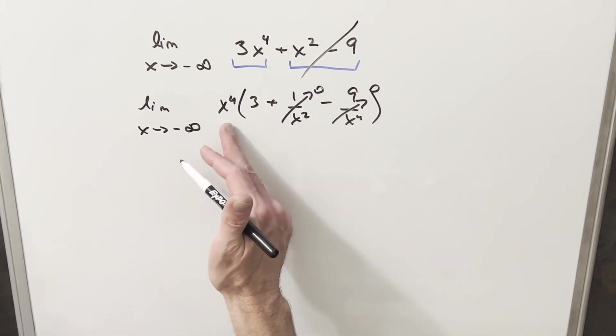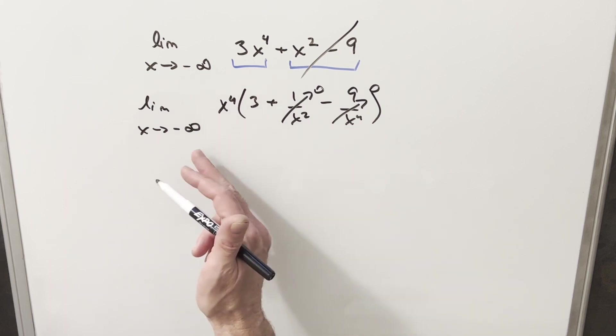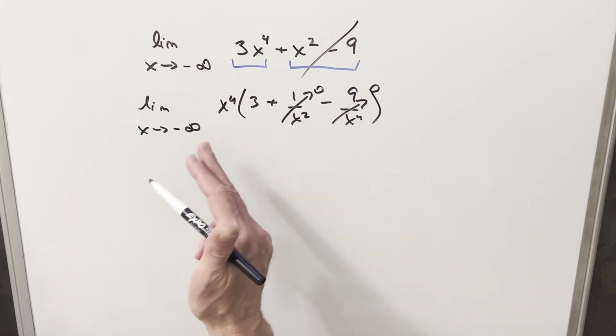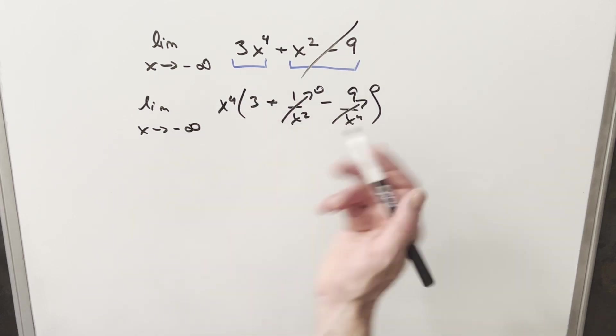And now looking just at minus infinity, if we take it to the 4th power, well, that's just going to give us infinity. We don't have to worry about the negative sign because we have an even power, so this is going to infinity, 3 times infinity, so this limit is just going to be infinity.